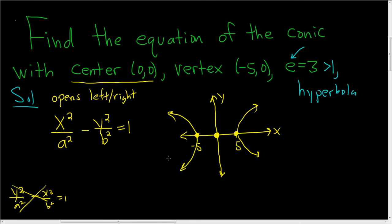So what else do we have? We have the vertex, we've written that down. So this distance is a, always, no matter what in the hyperbola. And so this distance is 5, so a is equal to 5. That's important because we needed a for our equation.